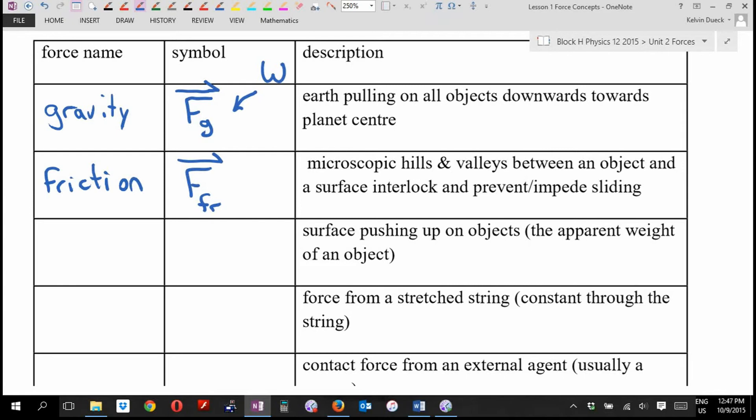What's the force that is a surface pushing up on an object? It's also called an object's apparent weight. I'll give you a hint - it's normally there. Call it the normal force. Normal in this case is a math term. In math, when you say two objects are normal to each other, you mean they're at a 90 degree angle. In other words, it always pushes up at a 90 degree angle.